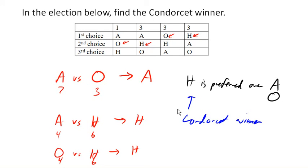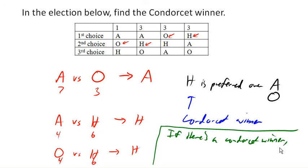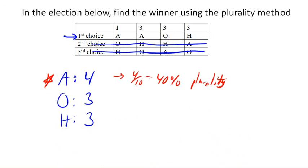It says that if there's a Condorcet winner, they should win. Or more appropriately, it would be fair if they win. And plurality is not doing that. So that suggests that plurality is not a particularly fair method for voting.